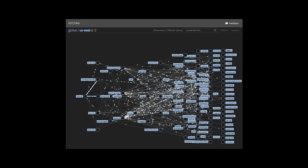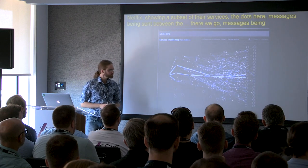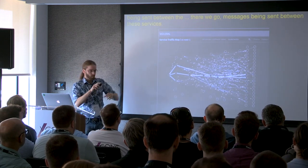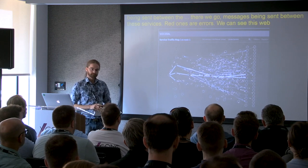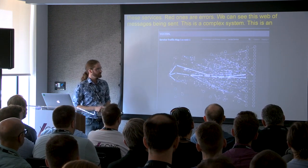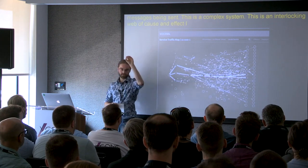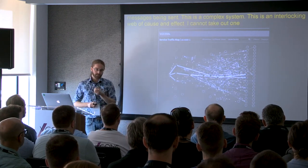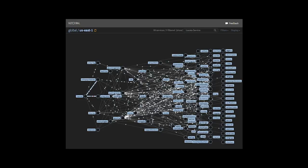This is a monitoring tool called Visceral, built by Netflix. It's showing a subset of their microservices. The little dots here are messages being sent between these services. Red ones are errors. We can see this web of messages being sent. This is a complex system, an interlocking web of cause and effect. I cannot take out one of these services and study it in isolation. It only makes sense to understand this system as a whole. Nobody at Netflix understands this whole system. There may be engineers who understand one or two or three or four or five or ten of these services. Nobody understands every single microservice in Netflix.